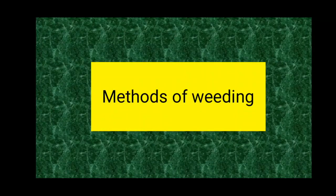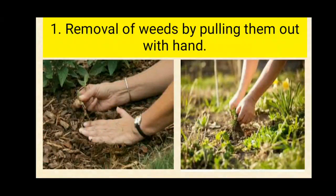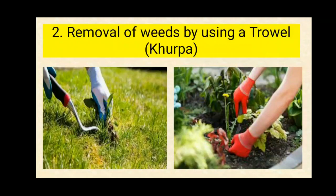One method is removal of weeds by pulling them out by hand. Weeds can be removed from the crop fields just by pulling them up with hands, as you can see in the picture. When we pull the weeds, they get uprooted from the field. These uprooted weeds can then be thrown away.